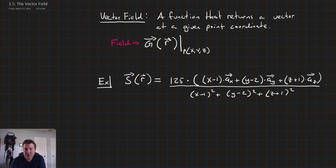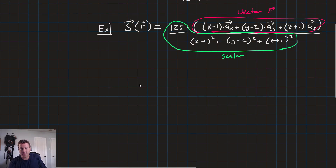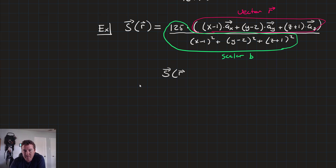Notice that this expression has two major components. It's got a vector inside it — that's our vector r — and everything around it is just our scalar. Let's call our scalar b. We can say that S is a function of r and is equal to b times r.